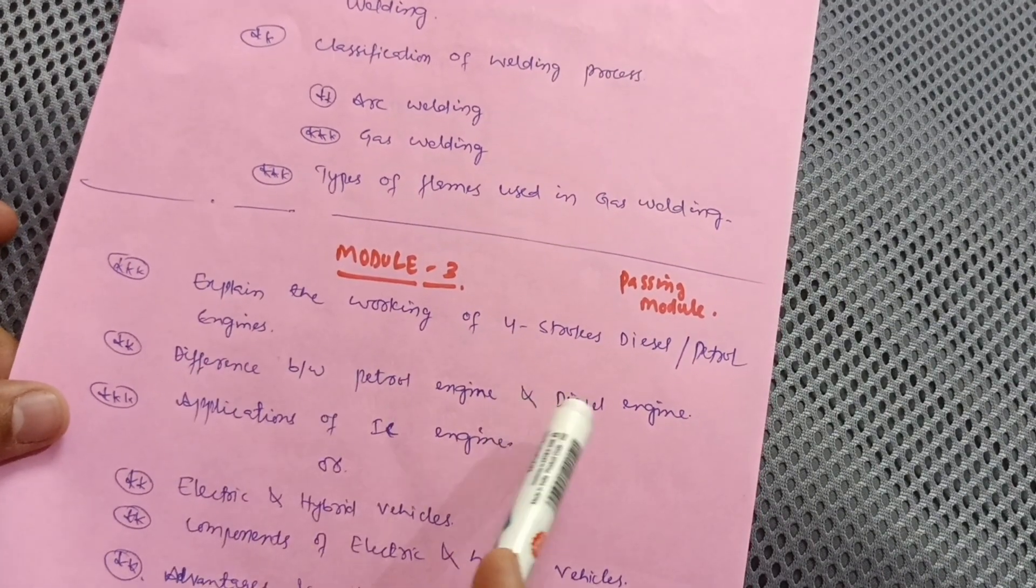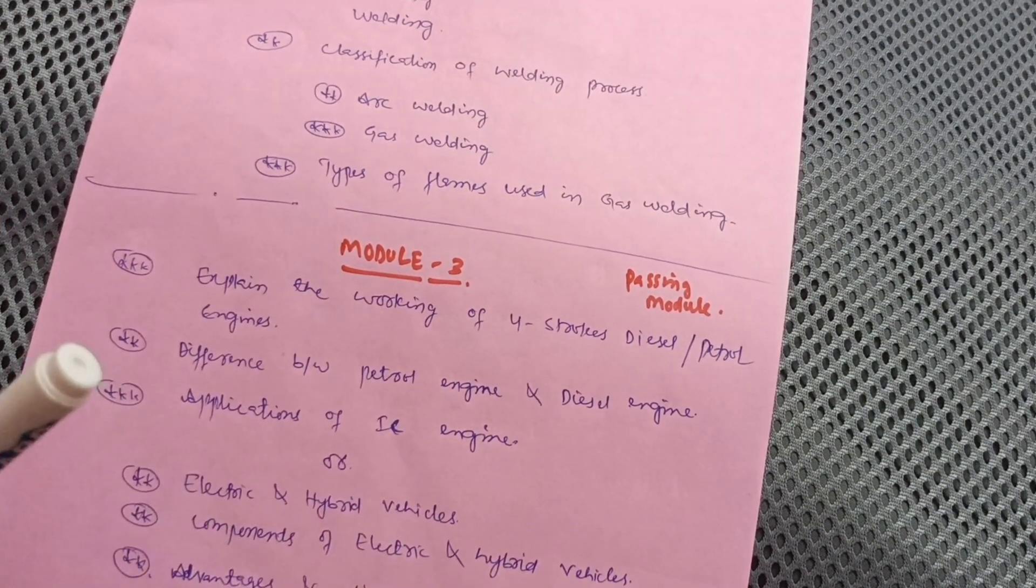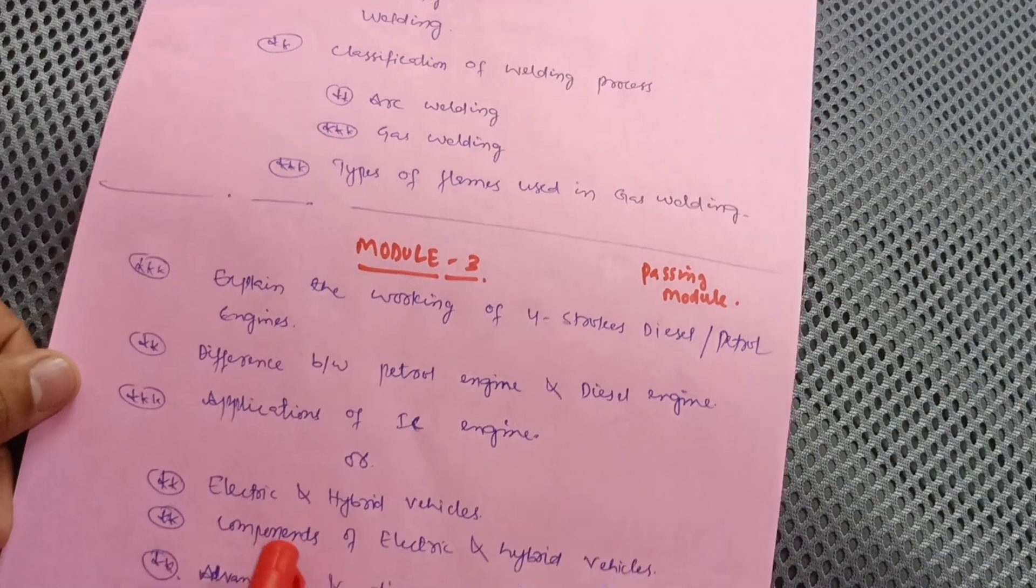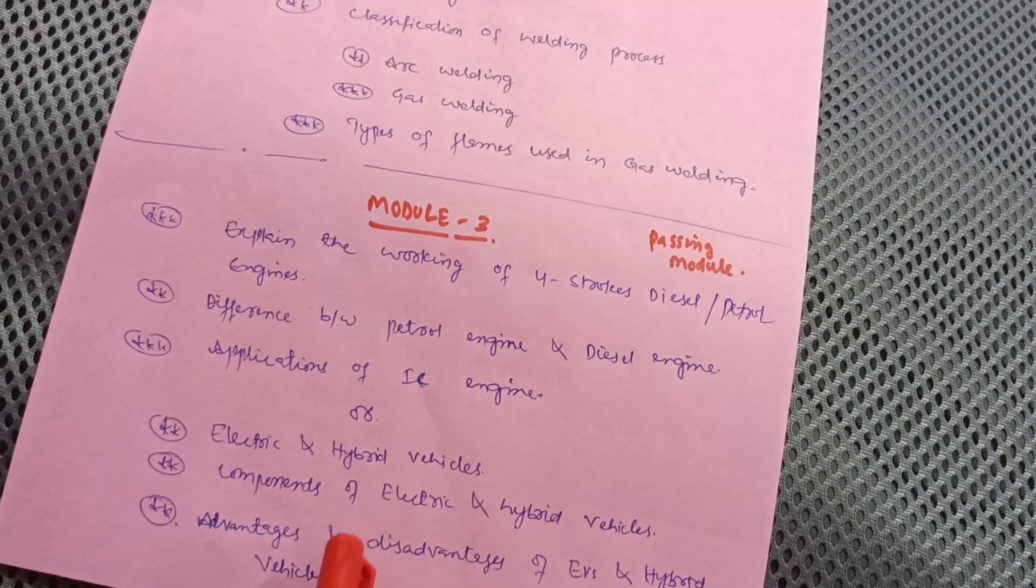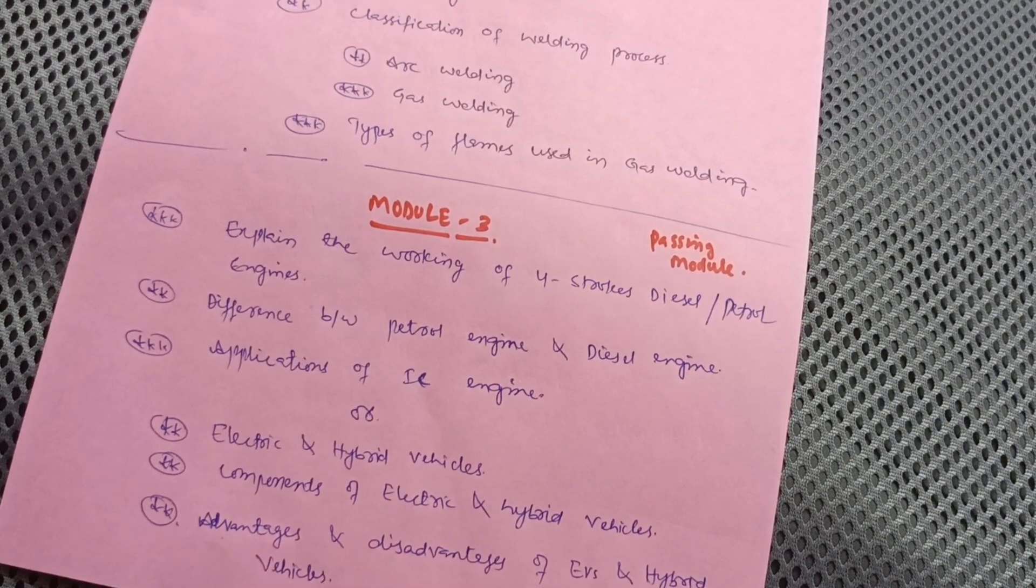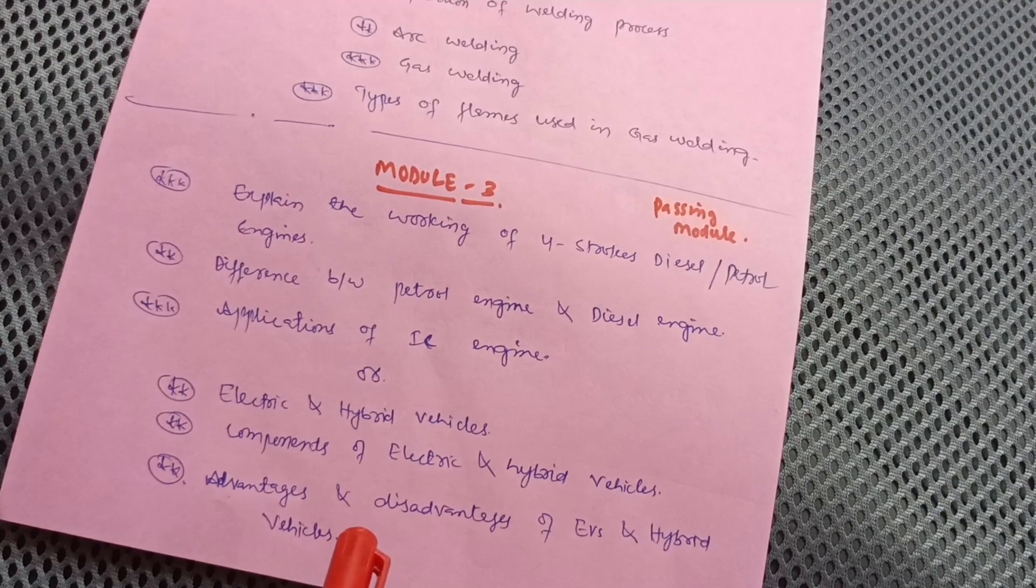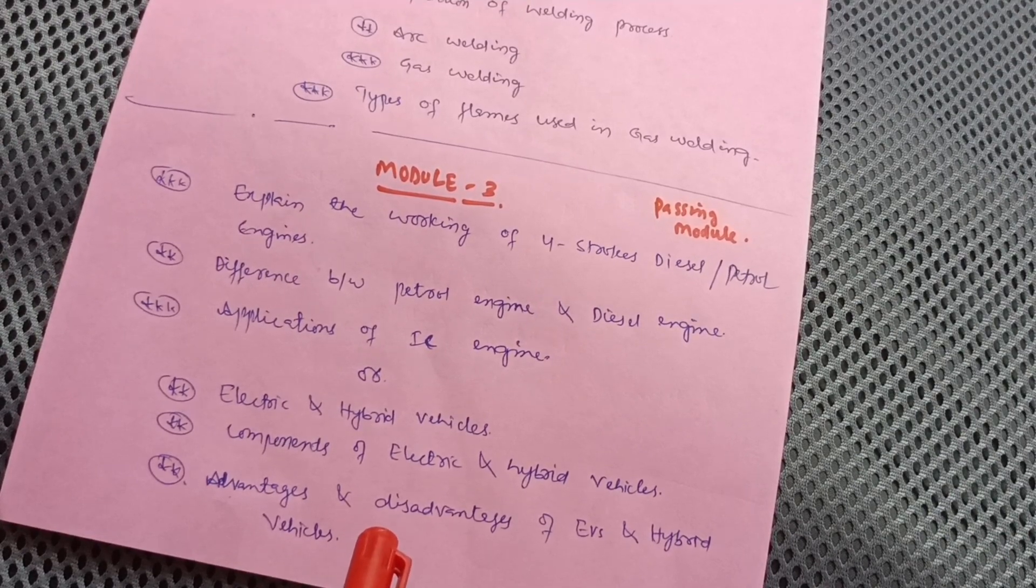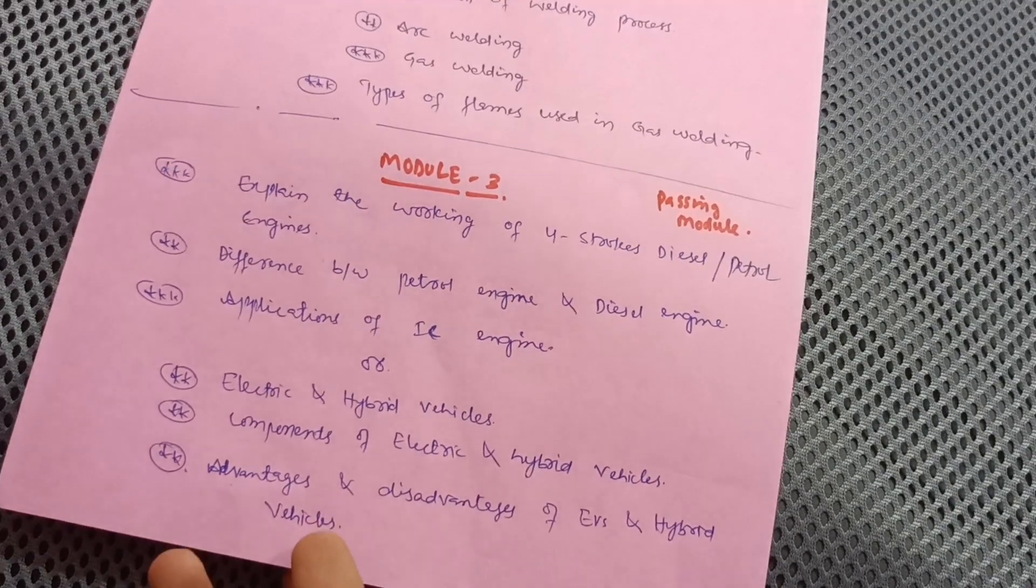You have to go through electric and hybrid vehicles, components of electric and hybrid vehicles, and advantages and disadvantages of electric and hybrid vehicles. These six questions are enough to cover Module 3, giving you 60 marks from three modules total.